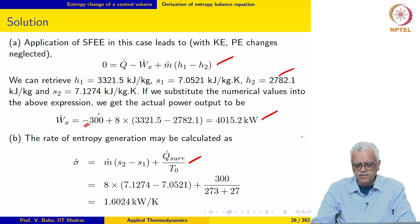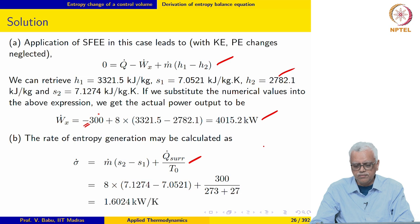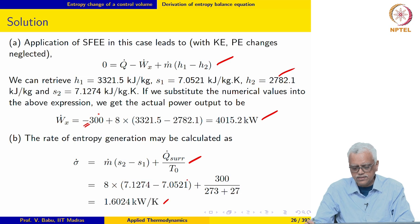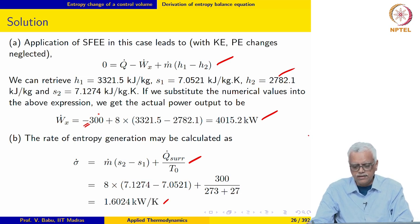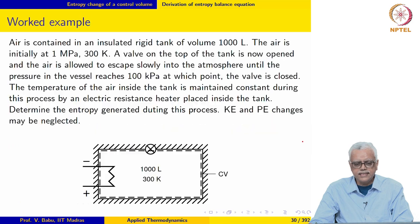The rate of entropy generation in the universe may be evaluated using the steady flow process expression — the time derivative drops out. After substituting the values, we get a positive number, as it should be, for the rate at which entropy is generated in the universe.